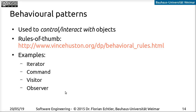Let's continue with the behavioral patterns. This is the last of the big groups from the Gang of Four book. These are used to control objects and interact with them. We are going to look into four important examples: iterator, the command pattern, visitor, and last but not least, observer.